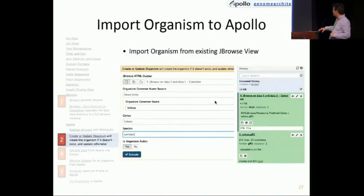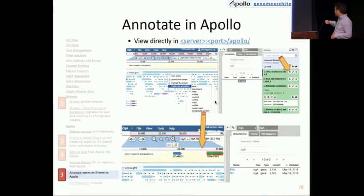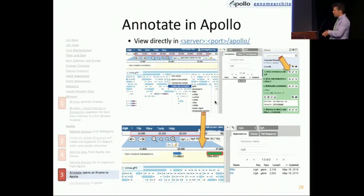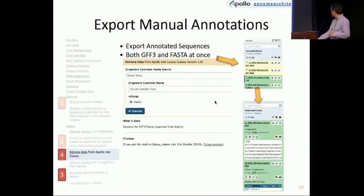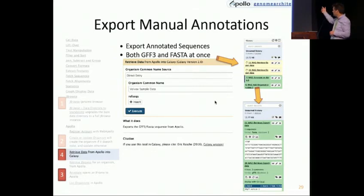Once you have that JBrowse data, you can add it or create an organism based on that. Once you have that built in, you click on the view and then you can annotate. Since it's Docker, it's actually a separate server running off of Docker, so you can connect to Apollo directly. I would get rid of the left-hand panel — too many iframes and it doesn't work quite right. But you just get rid of that and it works quite nicely. You can create annotations, and once created, you can export directly from Apollo, or the cool thing working with Galaxy is you can export them directly back into the workflow — GFF3 and FASTA — and create additional evidence using that.